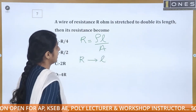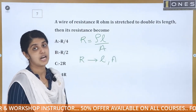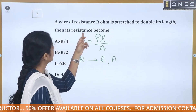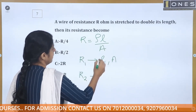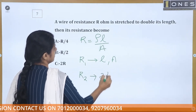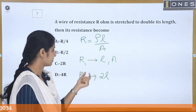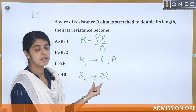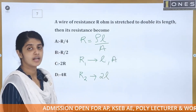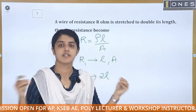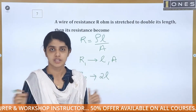The wire has length L, area A, and resistance R ohm. If we stretch this wire so its length doubles to 2L, the area is not going to remain fixed. Because it is a wire — if you stretch it, the area decreases. We use volume conservation.